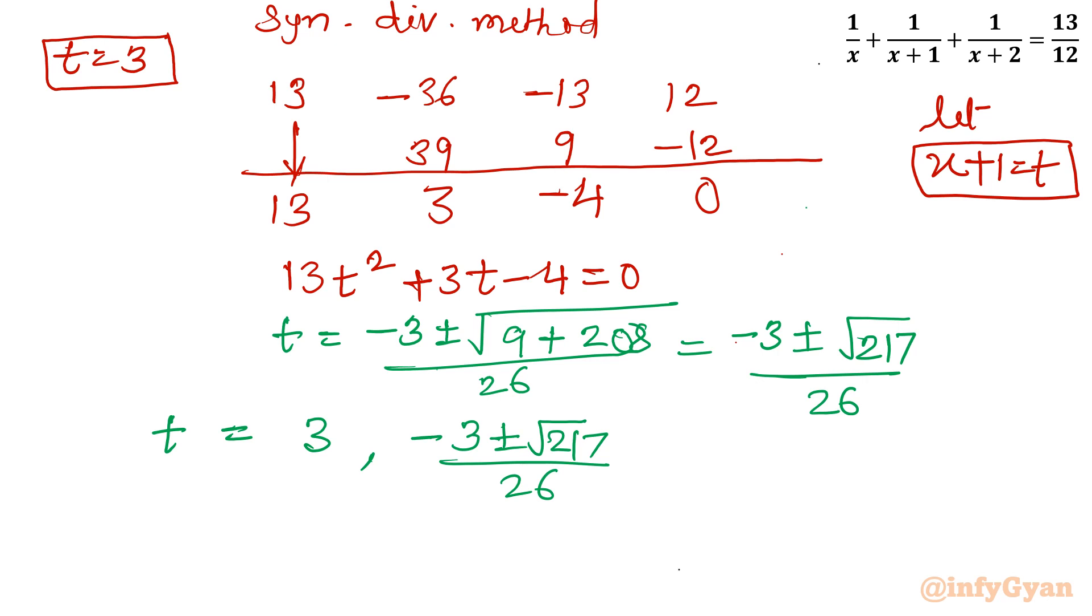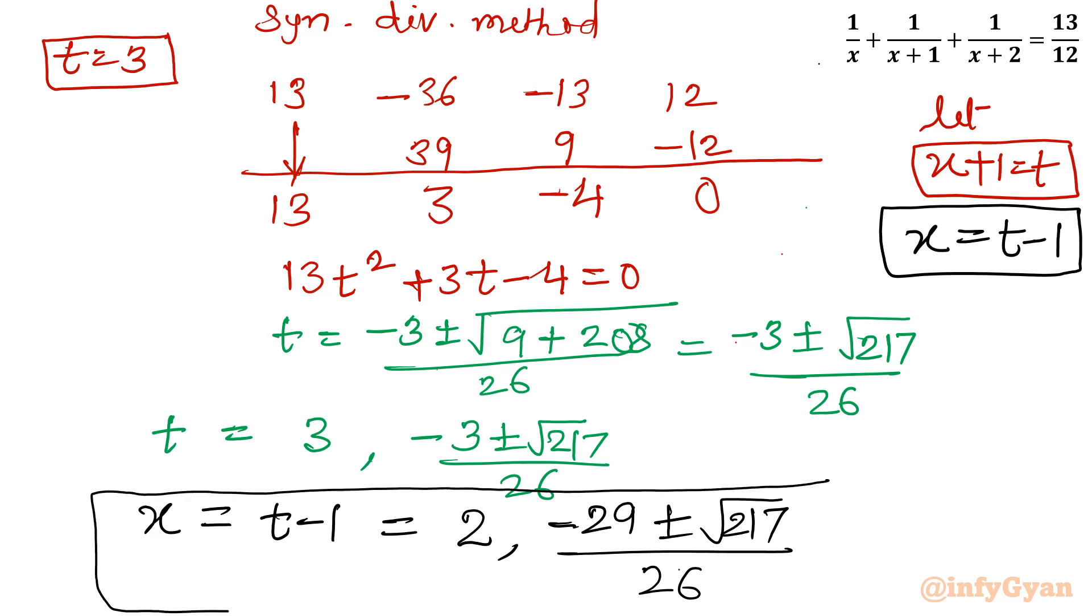Now we have to find out the value of x. So x will be equal to t minus 1. So I will take away 1. x will be equal to 3 minus 1, so 2. And this value minus 1 will come out minus 29 plus minus square root of 217 divided by 26. So this is our final solution.